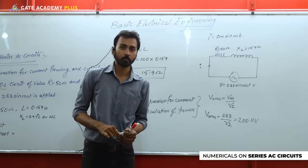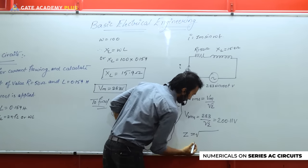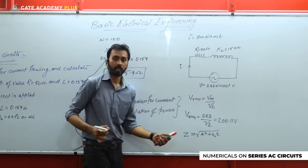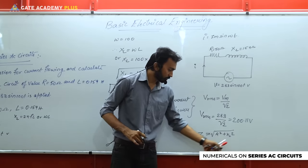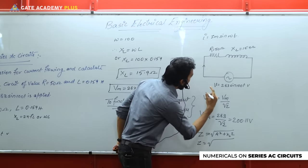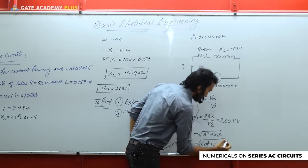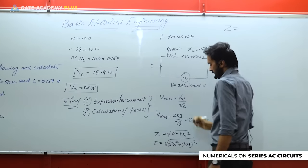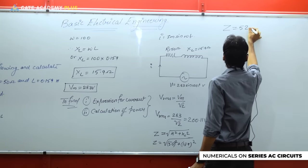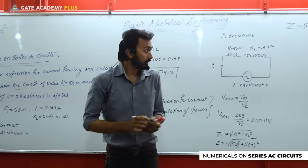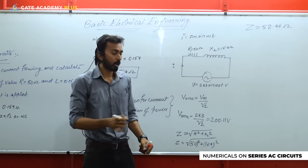Vrms = 283 / √2 ≈ 200.11 volts. Next, calculating Z: Z = √(50² + 15.9²) = √(2500 + 252.81) ≈ 52.46 ohms. So now we have Vrms = 200.11 volts and Z total = 52.46 ohms. Using V = IZ, we can find Irms = Vrms / Z total.